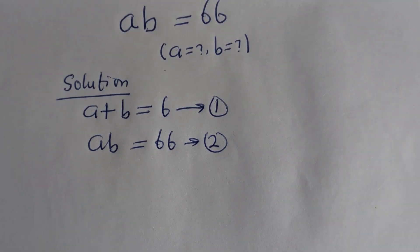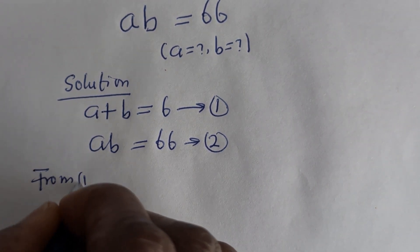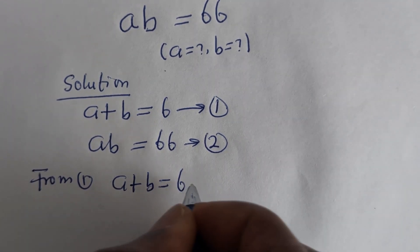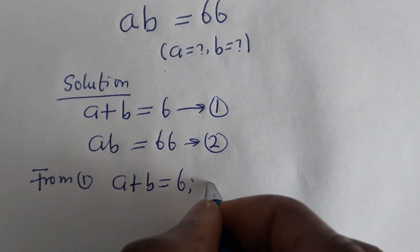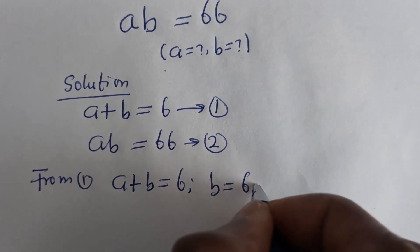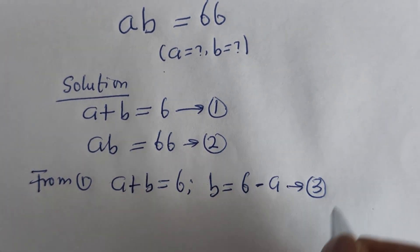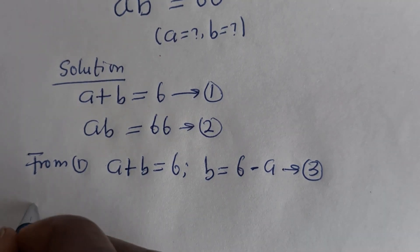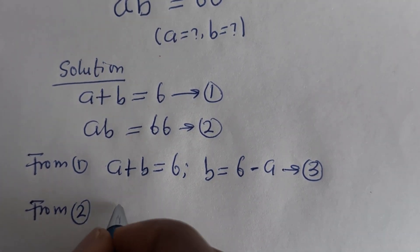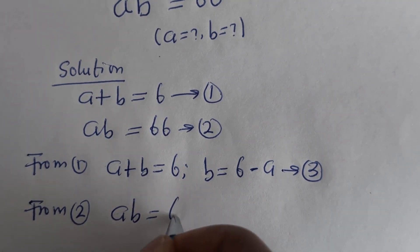From equation 1, A plus B is equal to 6, therefore B is equal to 6 minus A — let us call this equation 3. From equation 2, AB is equal to 66.